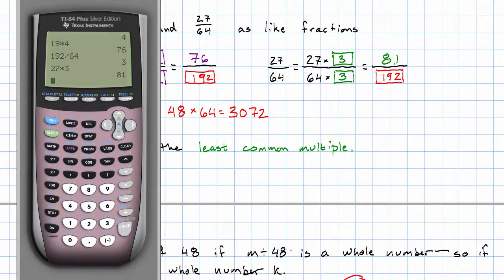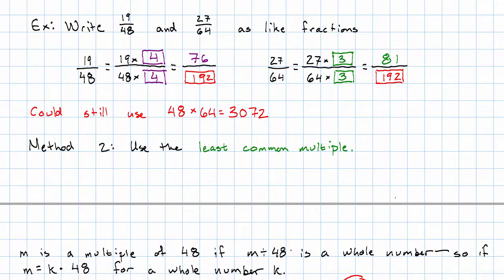We have 81, 192nds. Our like fractions, then, are 76, 192nds and 81, 192nds. And these are still mildly unpleasant numbers, of course, because the numbers we started with were fairly large. But they're much less unpleasant than if we'd gone with the denominator 3,072.